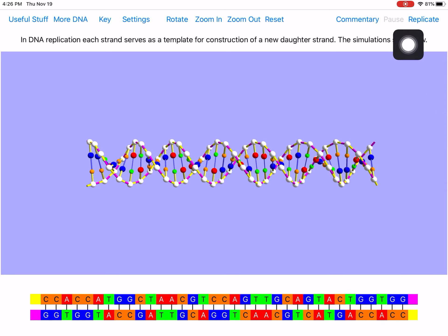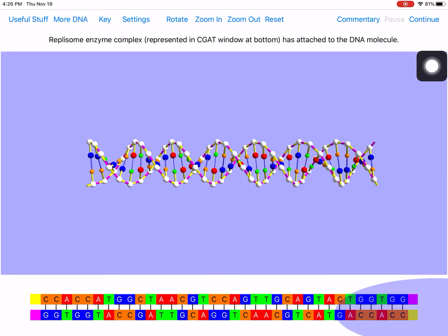If you first start off by selecting Replicate up at the top corner, you'll see that the process starts off with an enzyme shaded in light purple here at the bottom that represents the double-stranded DNA template. And you'll also get an animation in the main screen.